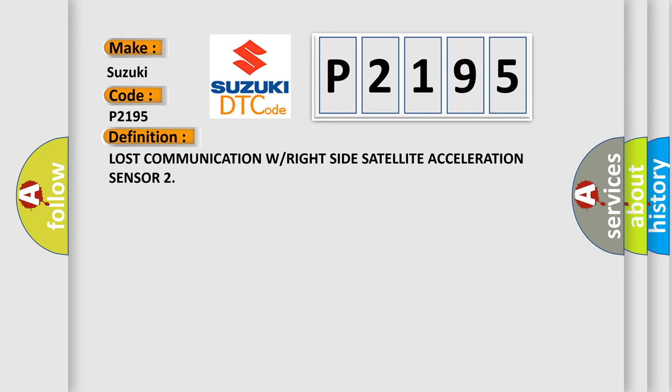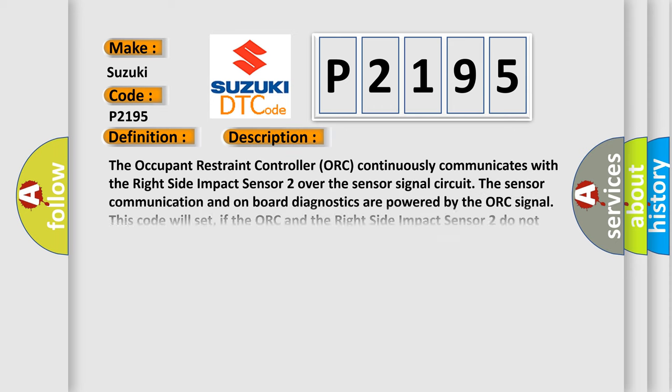Here is a short description of this DTC code. The occupant restraint controller (ORC) continuously communicates with the right side impact sensor 2 over the sensor signal circuit. The sensor communication and onboard diagnostics are powered by the ORC signal. This code will set if the ORC and the right side impact sensor 2 do not establish and maintain valid data communications. The DTC will become active after the fault has been set for 9 seconds, and will go to stored after communication has recovered for 4 seconds. The DTC can clear within the same ignition cycle.